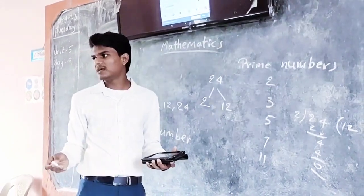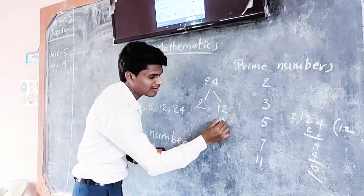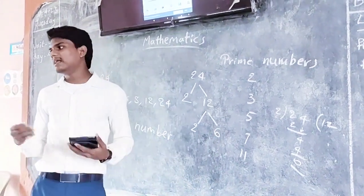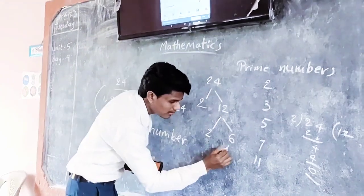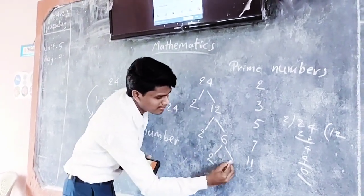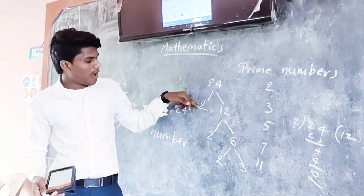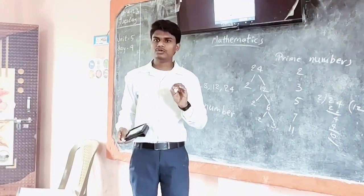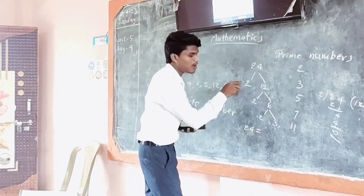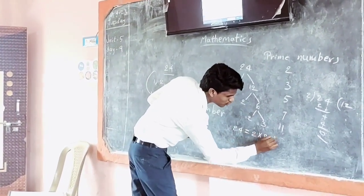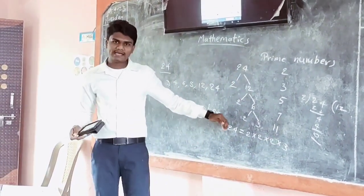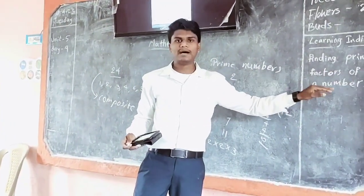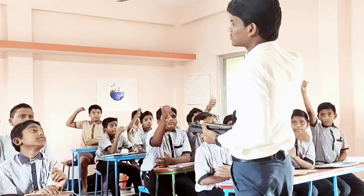Again, I will do the same process. Smallest prime number 2 on the left branch and quotient 6 here. Again, same process — smallest prime number 2 and quotient 3. We now have all prime numbers on the branches. Finally, 24 is the product of all the prime numbers: 2 × 2 × 2 × 3. That's how I can find the prime factors of a number easily.